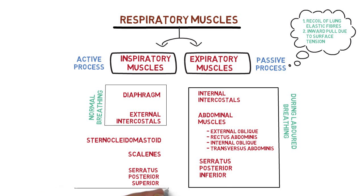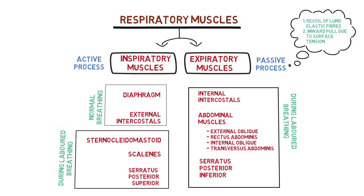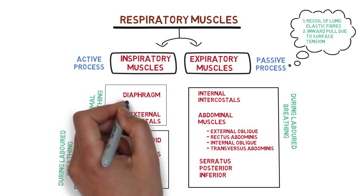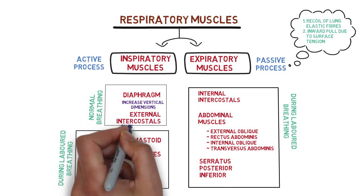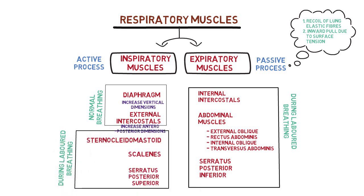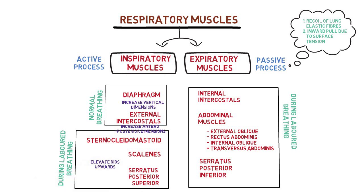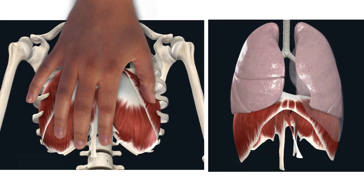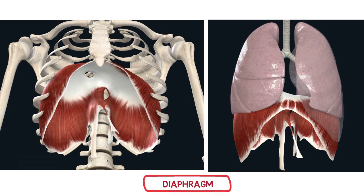The diaphragm increases the vertical dimensions of the thoracic cavity while the intercostals increase the anterior-posterior dimension. Other inspiratory muscles generally elevate or pull the ribs up, whereas the expiratory muscles will depress or pull the ribs downwards to make the thoracic cavity volume smaller. The most important inspiratory muscle is the diaphragm. It forms a dome shape when it relaxes and flattens when it contracts.